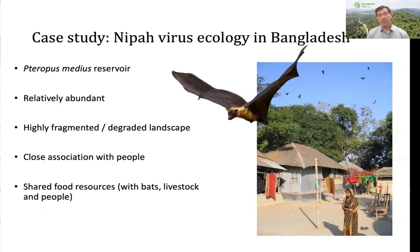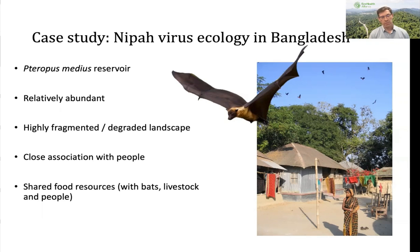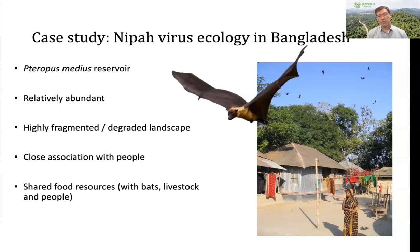Nipah virus is a paramyxovirus in the same family as measles, rinderpest, and canine distemper virus, but in a group of viruses carried by large fruit bats that cause very severe central nervous system disease in people and are fatal between 40 and 75 percent of the time, sometimes 100 percent depending on the outbreak. Nipah viruses and related viruses have a wide species tropism, meaning they are able to infect a lot of different mammals, but we know that bats carry them.